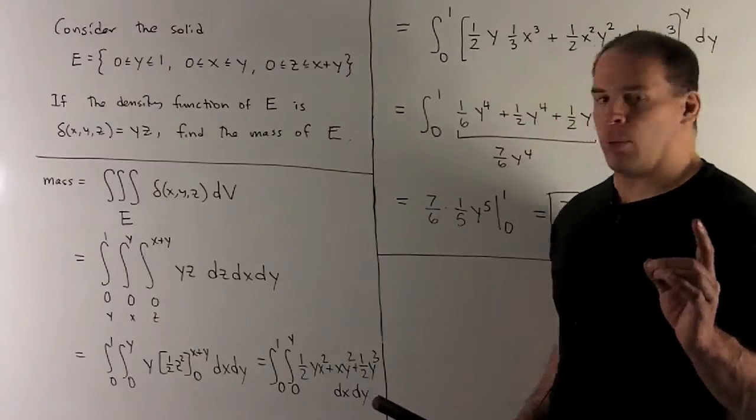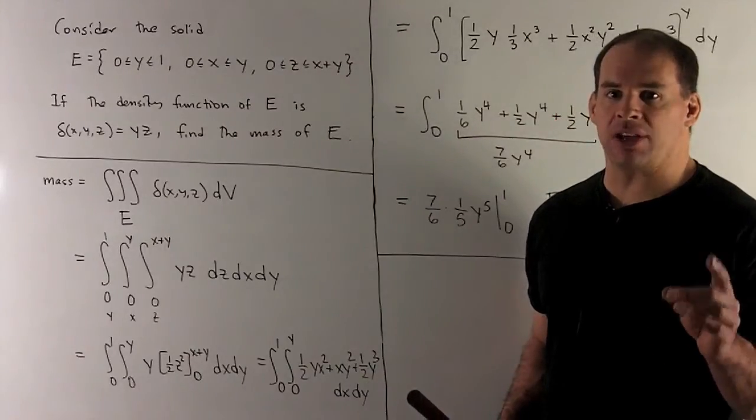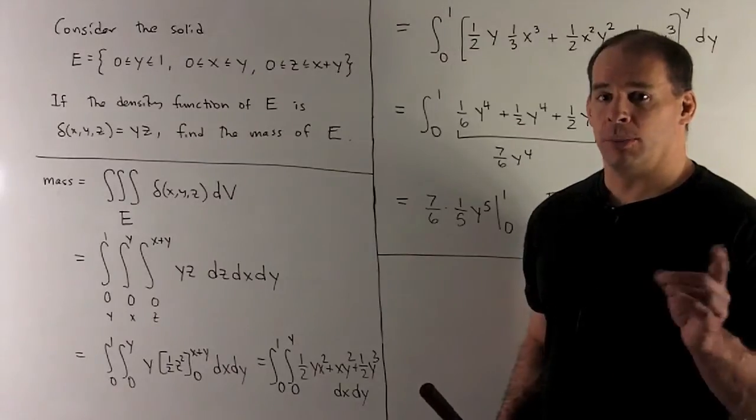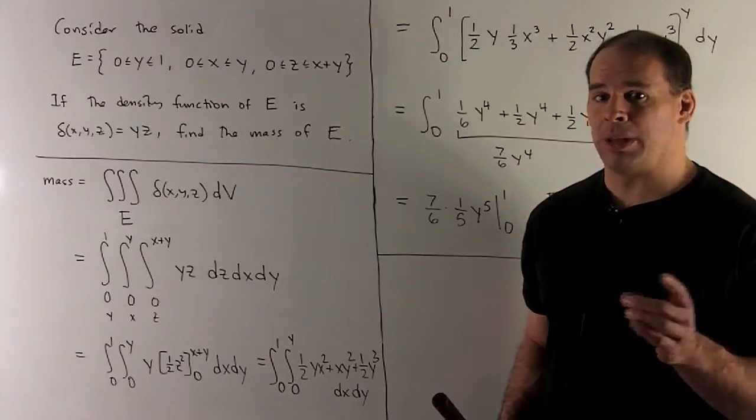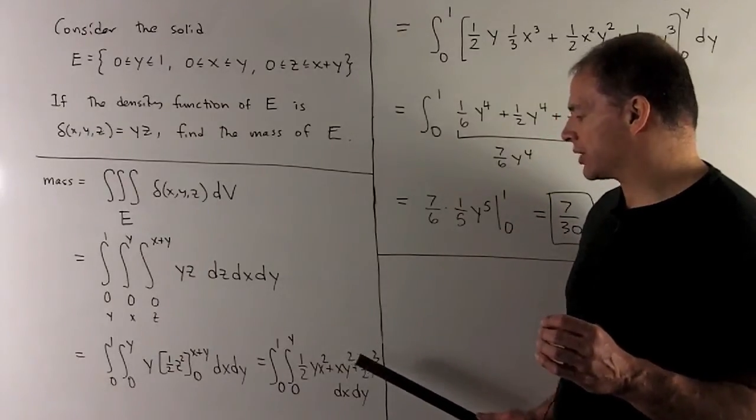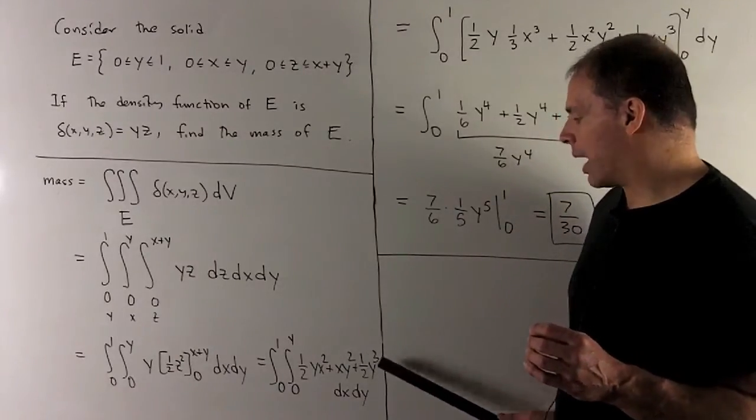That gives us, your (x + y) squared is going to give you x squared, 2xy plus y squared. You multiply that by a y, then multiply that by a half. That gives you the polynomial: (1/2)yx² + xy² + (1/2)y³.